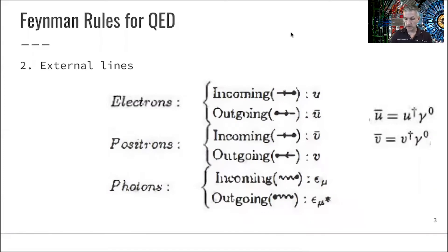For outgoing electrons, for outgoing particles, we have this adjoint vector given by U-dagger gamma-0. Similarly, for the incoming antiparticle, V-dagger gamma-0. For the photon, we have the polarization vectors for incoming and outgoing photons.